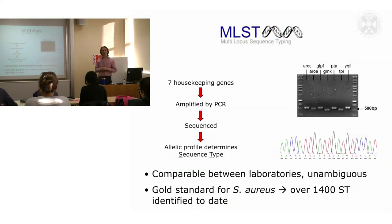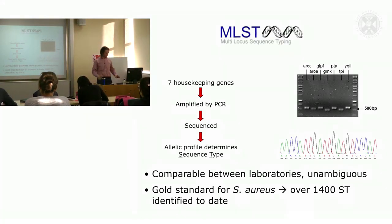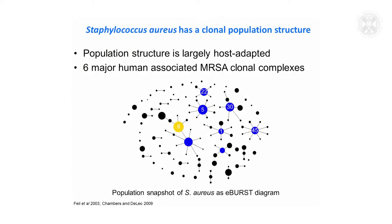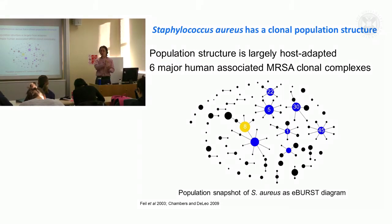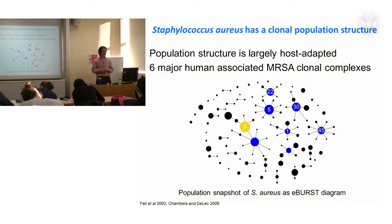More recently, we're using whole genome sequencing, getting much better resolution of the diversity across the entire Staph aureus species. It has a largely clonal population structure — meaning it evolves and diversifies by mutation more often than by recombination, where short stretches of DNA are horizontally acquired between different strains and replace existing stretches. So it evolves more by clonal mutation than by recombination.